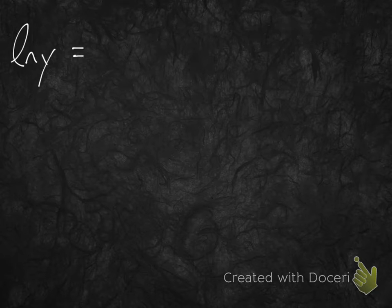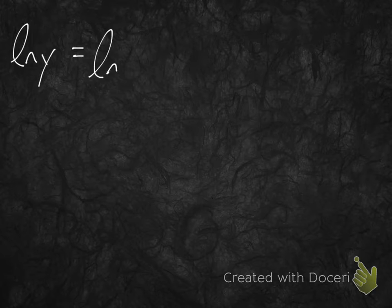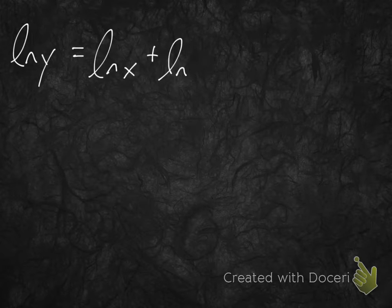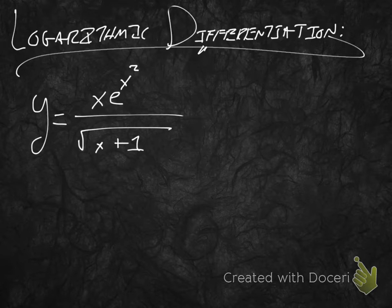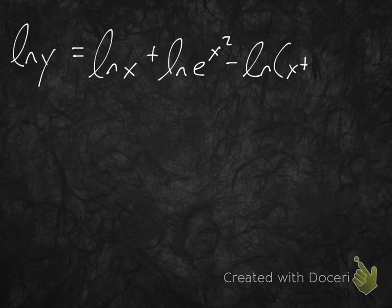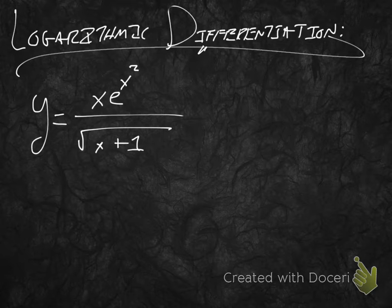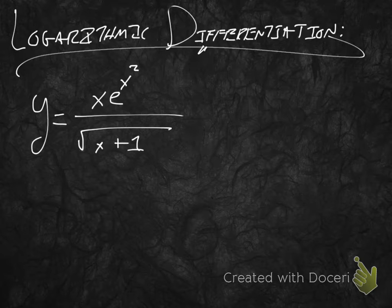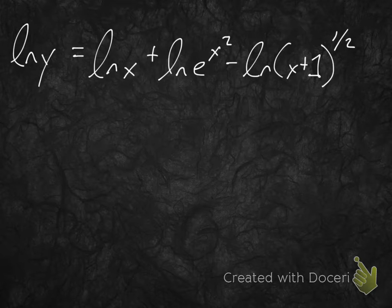On the top this is a product, so taking log will turn that into a sum. So, we'll just have ln of x plus ln of e to the x squared minus, because that's what we do with our denominator, we're going to subtract the denominator, minus ln of x plus 1 to the 1 half. Now, if I was able to do that, well, x plus 1 radical is the same thing as x plus 1 to the 1 half. It's the exact same thing, so I'm just making it easier on us by putting a power there instead of leaving that radical. So, now we have this.